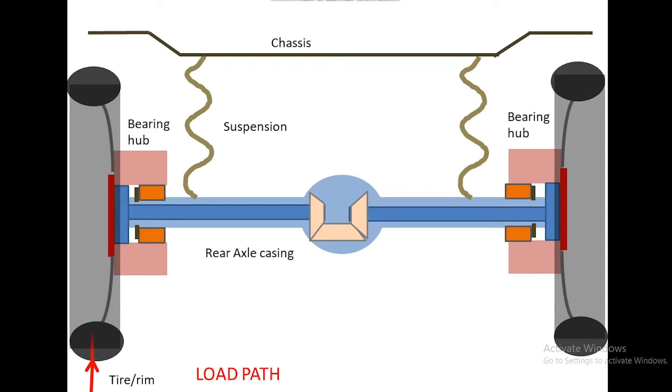The reaction load is transferred through the bearing hub to the axle casing then to the suspension. In this way, the axle casing takes the full weight of the vehicle and absorbs all bending stress.